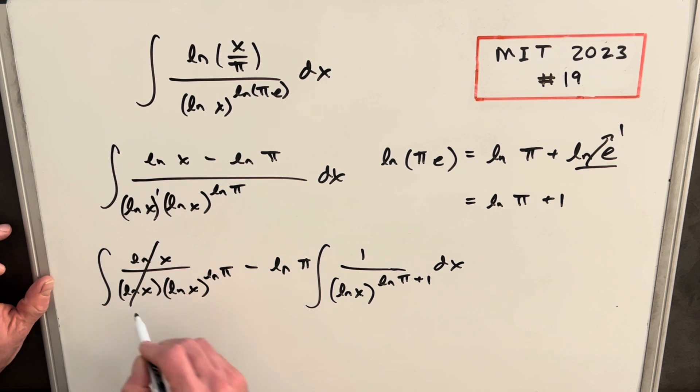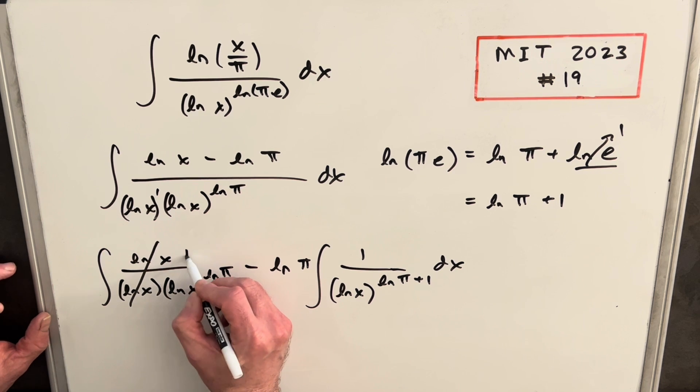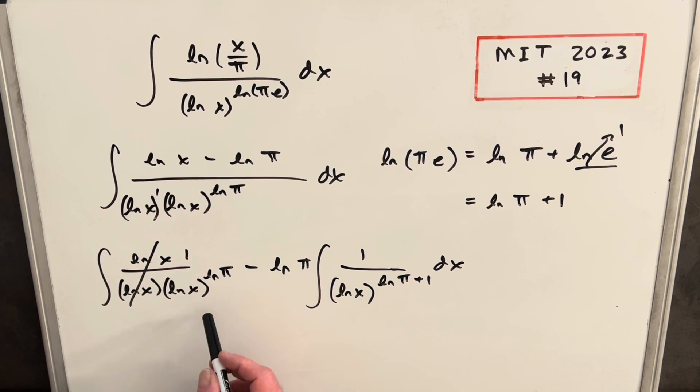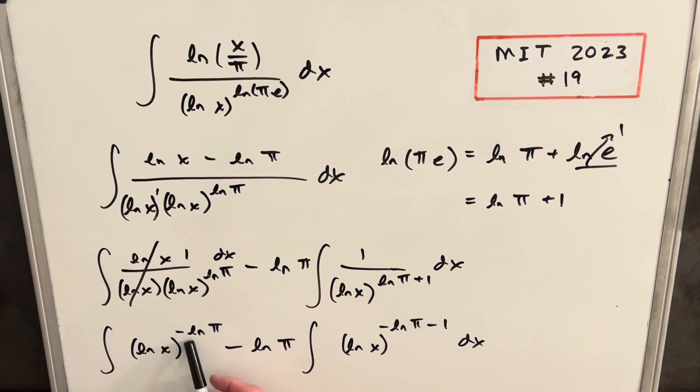And then here we get this cancellation here, because that's ln x over ln x. Then from here, I'm just going to do a quick rewrite. I forgot the dx here. I'm going to do a quick rewrite, and I'm going to bring this into the numerator as a negative exponent. So now we have our negative exponent, just bringing it into the numerator.